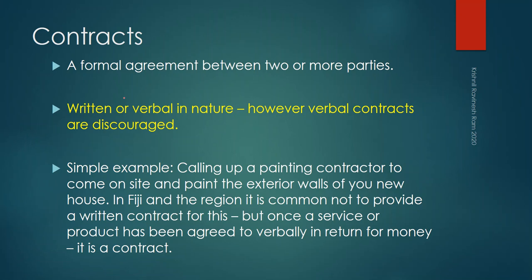A simple example of a verbal contract would be calling up your painting contractor to come on site and paint the exterior walls of your new house. In Fiji and most of the South Pacific region, it is quite common not to have a written contract for this sort of work — it's normally done on the phone: 'Hey Sam, can you come up and do some painting? How much is it going to cost? I'll supply this, you'll supply that.' And you have a contract in place. As soon as you have this exchange of services in return for money, it becomes a contract.